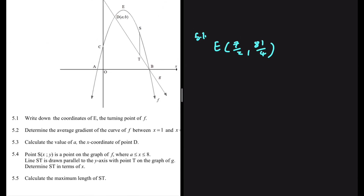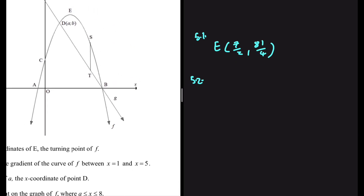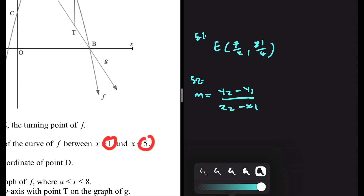Now let's look at 5.2: determine the average gradient of the curve of F between X is equal to 1 and X is equal to 5. So we're looking for the average gradient. Gradient is just Y2 minus Y1 divided by X2 minus X1. In our situation, we are given X1 and X2 — X is equal to 1 and X is equal to 5 — so we can find the Y value at each.